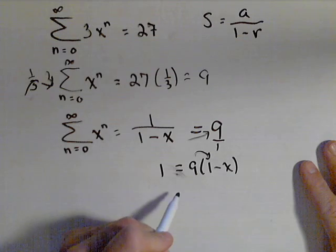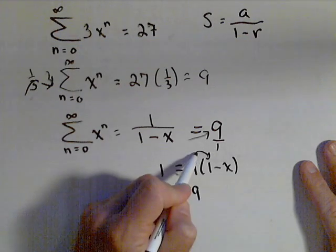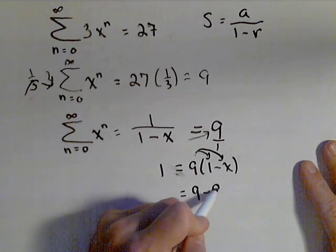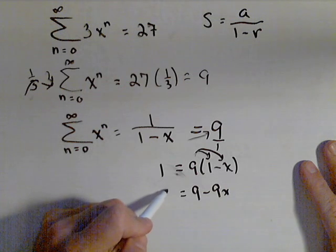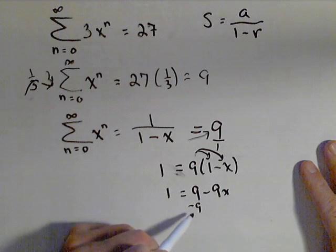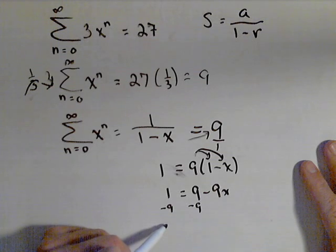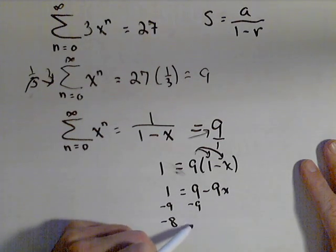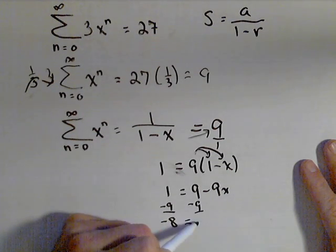Distribute the 9, so I get 9 times 1 is 9, minus 9x equals 1. Subtract the 9 off of each side. So over here, I get negative 8 equals negative 9x.